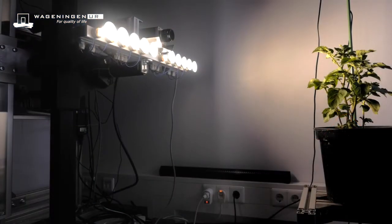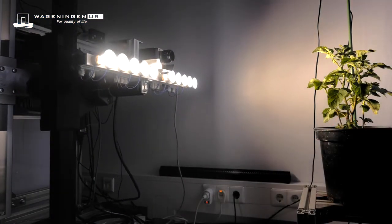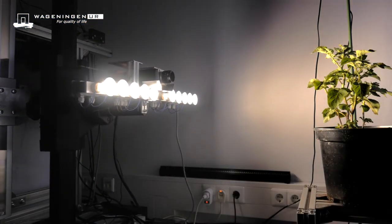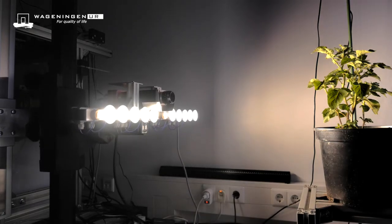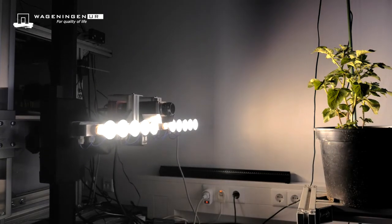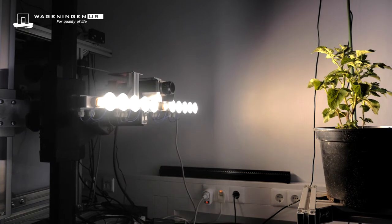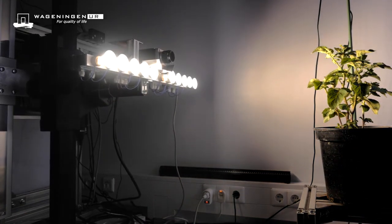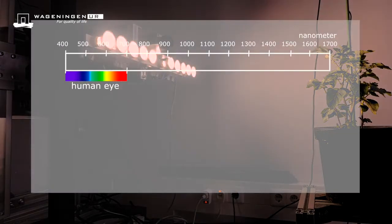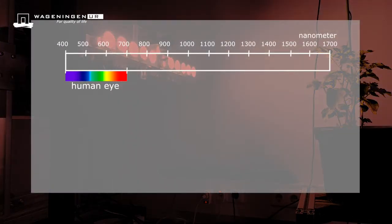In Wageningen we employ a hyperspectral imaging setup for scanning plants or plant parts such as fruits. This setup is capable of scanning the side or the top of plants in the visible and near-infrared range from 400 to 1700 nanometers.